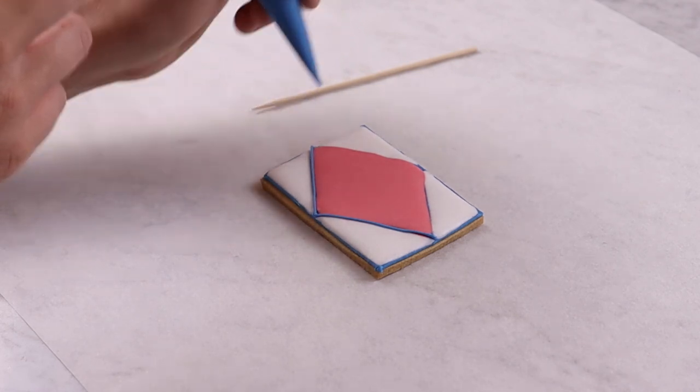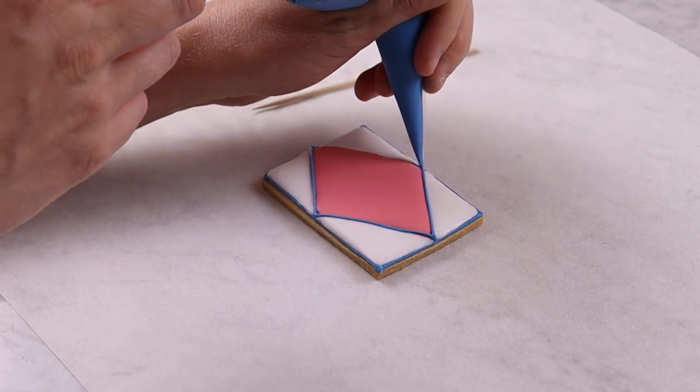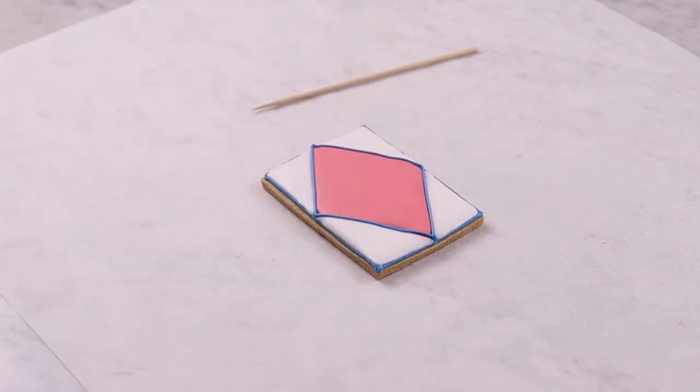When outlining shapes with line icing we tend to use a thicker line, and when adding details such as writing or decorations we use thinner lines. This will give the biscuit a neat finish.